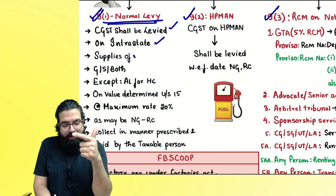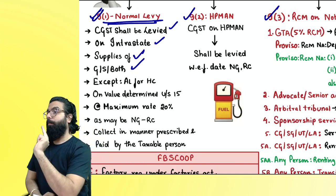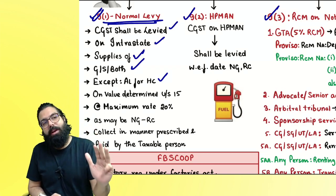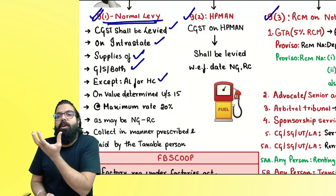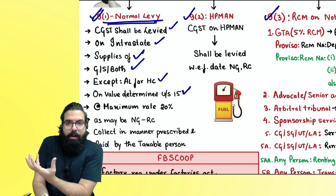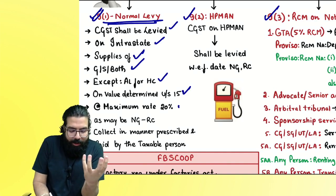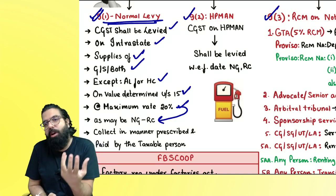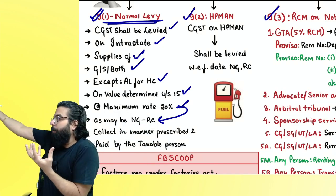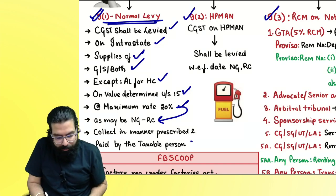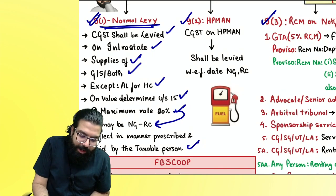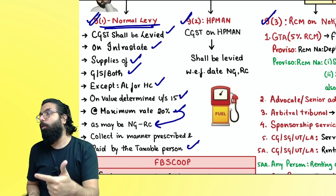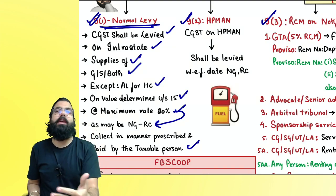CGST is not levied on alcoholic liquor for human consumption. It will be levied on the value determined under section 15, at a rate notified by the government on the recommendation of the GST Council. Section 9(2) states that for items like HSD, petroleum crude, motor spirit, aviation turbine fuel, and natural gas, GST will be levied from a date notified by the government on the recommendation of the Council.